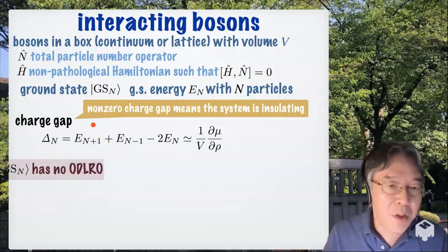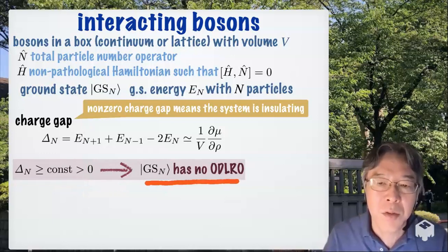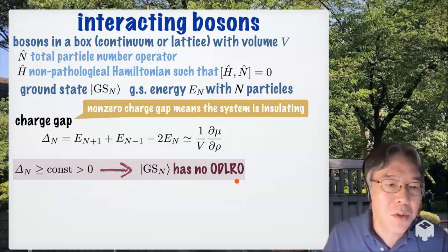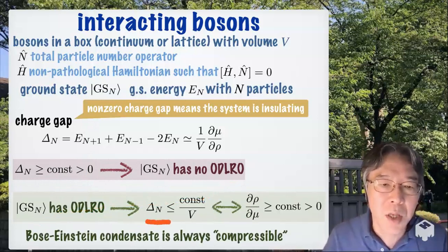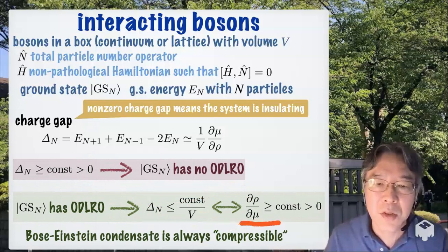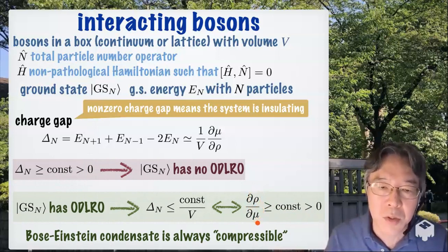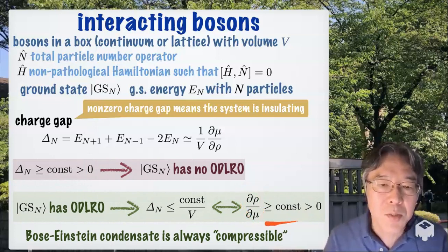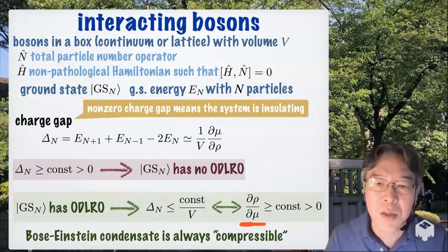Now, the first implication of our inequality is this. Suppose that delta N is strictly positive, then the ground state cannot have off-diagonal long-range order. The second implication is almost contraposition. Now, assume that the ground state has off-diagonal long-range order. Then we can show that this charge gap is upper bounded by constant over V. So this means that delta is vanishingly small if V is large. This inequality is almost equivalent to this one here. And here, rho is the density in the ground, particle density in the ground state, and mu is a chemical potential. And so d rho d mu is strictly positive. This means that when you change mu a little bit, also the density changes. So this means that a Bose-Einstein condensate is always compressible in the sense that this is strictly positive.